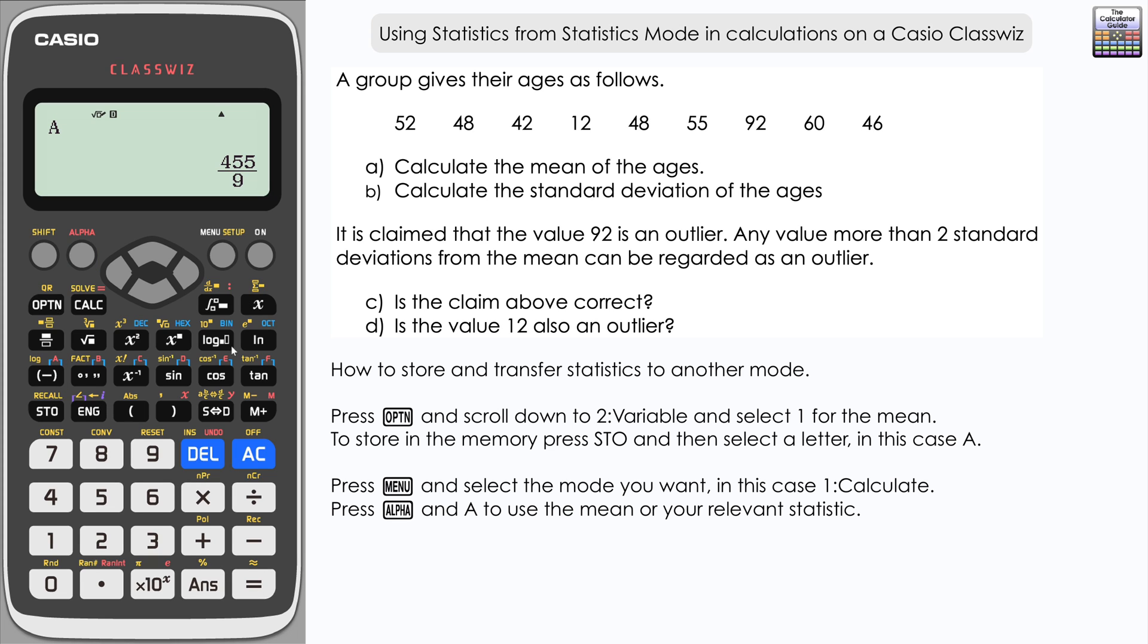Remember that we stored that in A, so press alpha A to recall, then equals. We've got it here displayed as an exact fraction. Let's have it as a decimal: 50.5 recurring. Of course, we could include that in subsequent calculations.